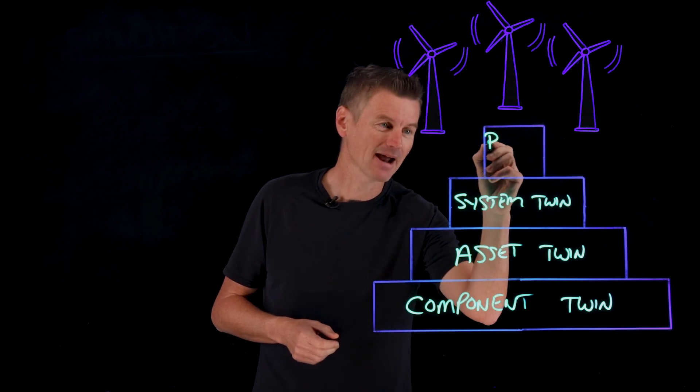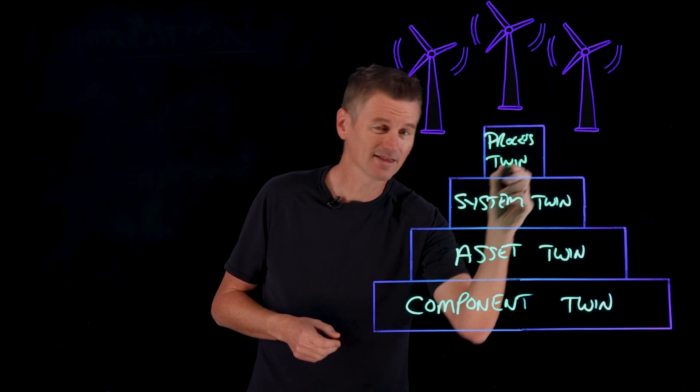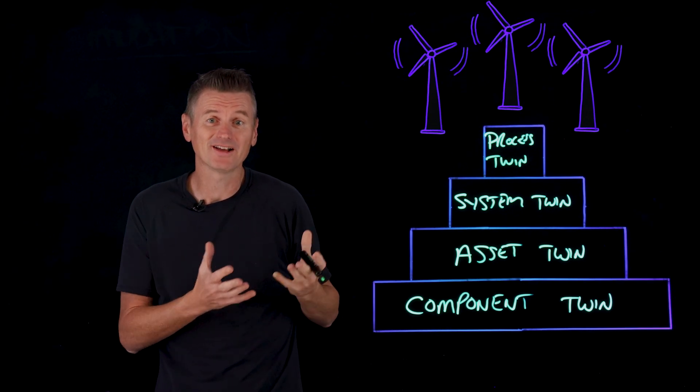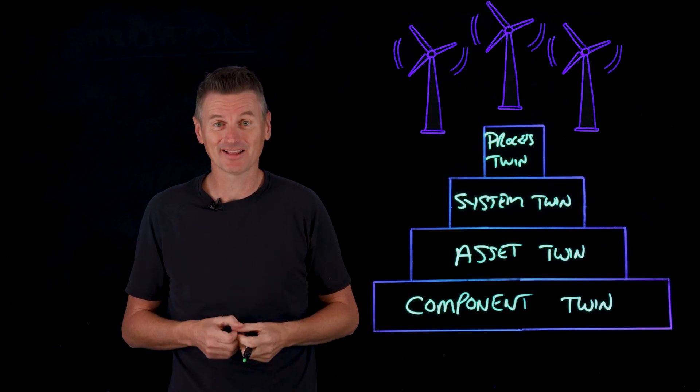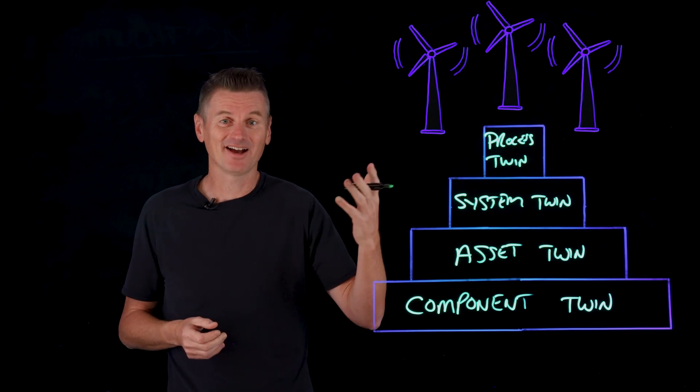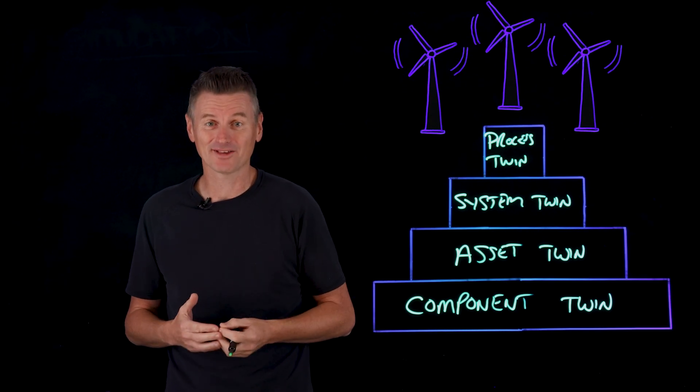At the macro level, we have process twins. Process twins reveal how systems work together to create an entire production facility. They can identify inefficiencies and optimize processes across multiple systems. A process twin for wind energy might model how energy is generated, stored, and distributed from a wind farm to the power grid, considering factors like energy demand and storage capacity.